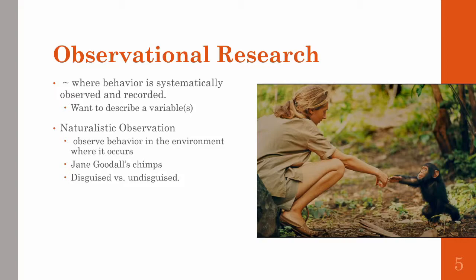From that research, we've learned a ton about chimpanzees' social structures, mating patterns, and family structures — all how they occur in the wild. There are two types of naturalistic observation: disguised and undisguised. In disguised observation, subjects are unaware that they're being observed, and in undisguised observation, subjects are made aware of the researcher's presence and monitoring of their behavior.